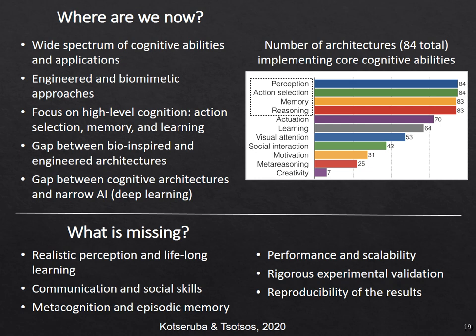If we look at the 84 architectures, we see that a lot of them implement the core capabilities of perception, action selection, memory, and reasoning. Then there's a drop off — many implement action in the world and learning, but far fewer do things like motivation, meta-reasoning, and creativity. What's missing? Very few of them have realistic perception, which is still an unsolved problem. Not many have full-blown communication capabilities because of the difficulty of natural language. And metacognition and episodic memory are things that have come along in the last 10 years, but we still don't see them as ubiquitous as would be nice.